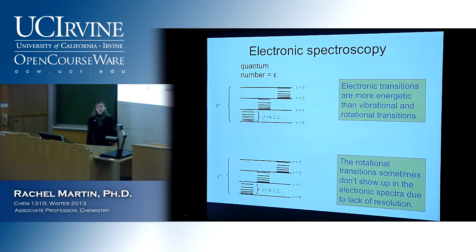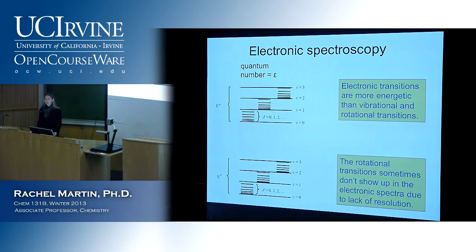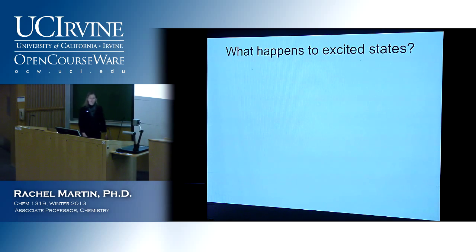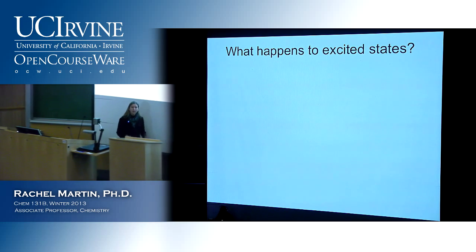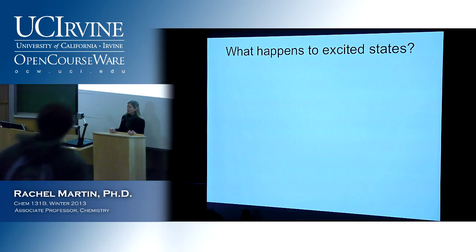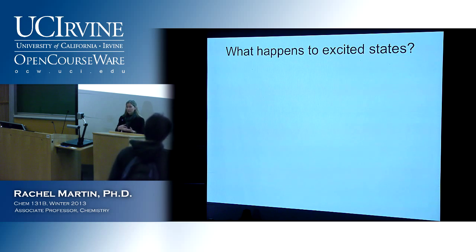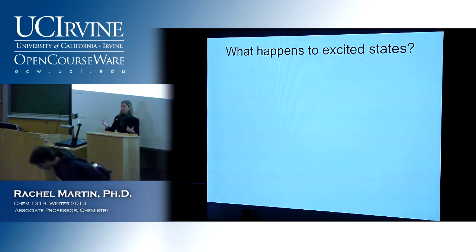Before we get into this in a more quantitative way, I want to go over some conceptual things. Let's talk about what happens to excited states. We get really hung up in PChem about talking about fluorescence — we excite a molecule to an excited electronic state and think about the transition back down. But if that happened most of the time, everything would fluoresce all the time. Clearly there are a lot of other ways to get rid of energy from excited states.